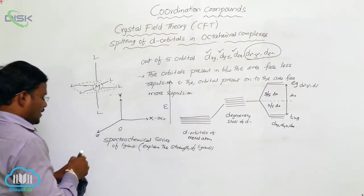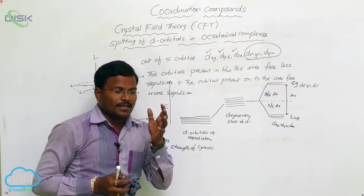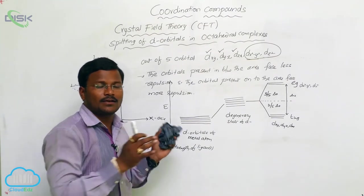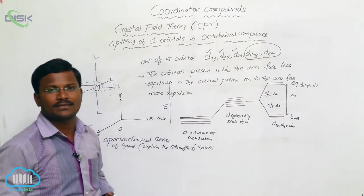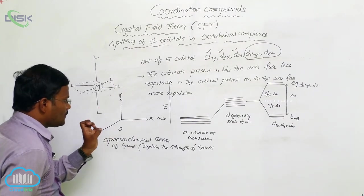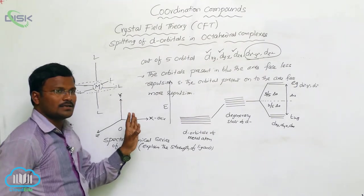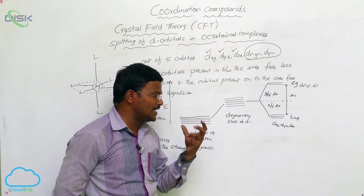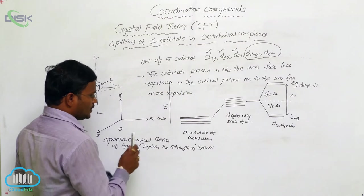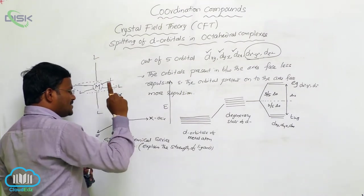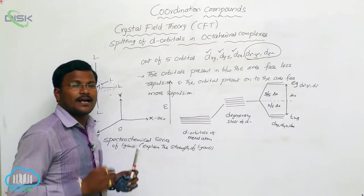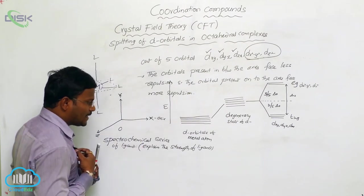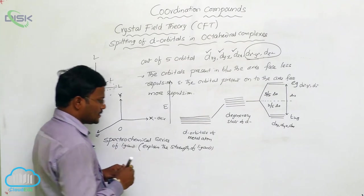As per our previous cases of valence bond theory (VBT), in the presence of some types of ligands, electron pairing takes place. In the case of some other ligands, electron pairing is not expected in the metal complexes. In the presence of a strong field ligand, electron pairing takes place due to more repulsion between d orbital electrons and ligands. VBT failed to explain which ligands are strong field and which are weak field, but the spectrochemical series allows us to identify this.